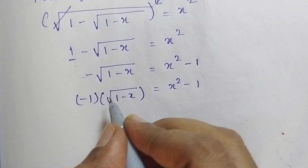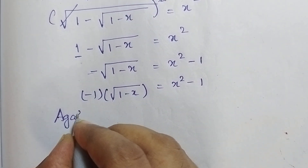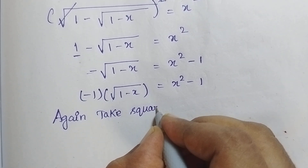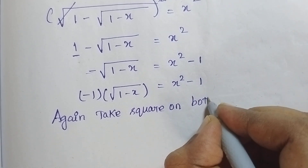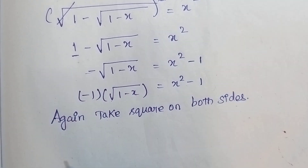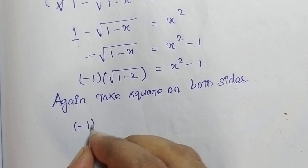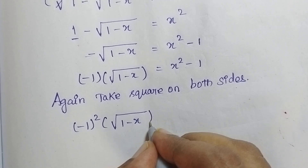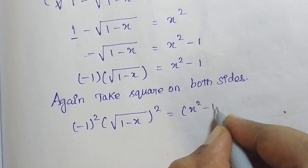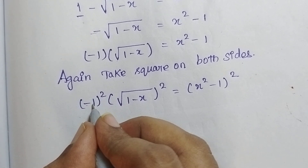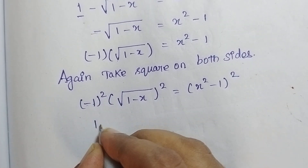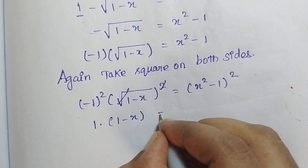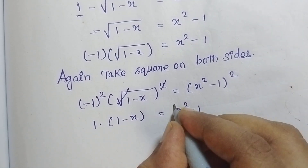So in order to remove the square root, I am going to take the square on both sides again. Therefore (-1)² into [√(1 - x)]² which is equal to (x² - 1)². So (-1)² is 1, and the square and root cancel. Therefore 1 - x = (x² - 1)².